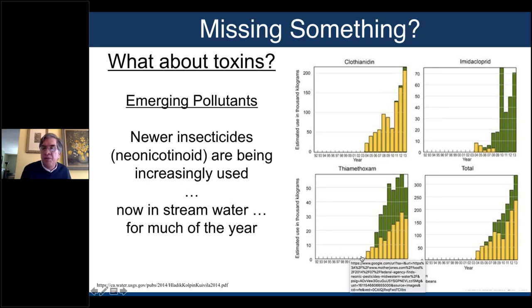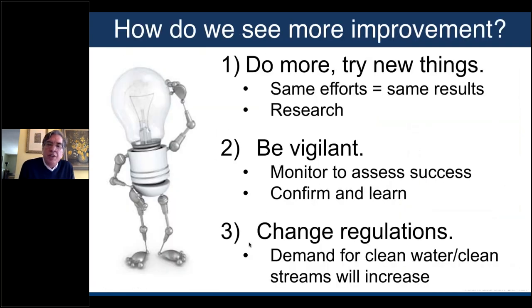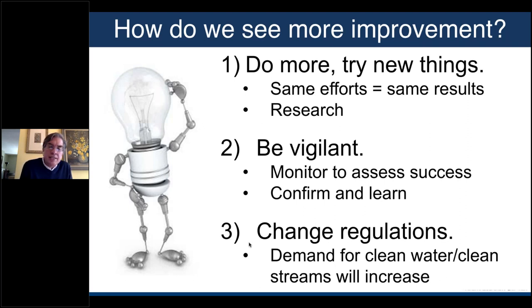Our policies and practices need to adapt to the idea that farming practices are changing. My recommendations: we have to do more and try new things — the same effort gives the same result, and right now we're not seeing good results. We also have to remember that some of what we're doing is research — we're asking whether this will make a difference. Be careful what you promise, because we don't have a lot of evidence that new approaches are a good investment.